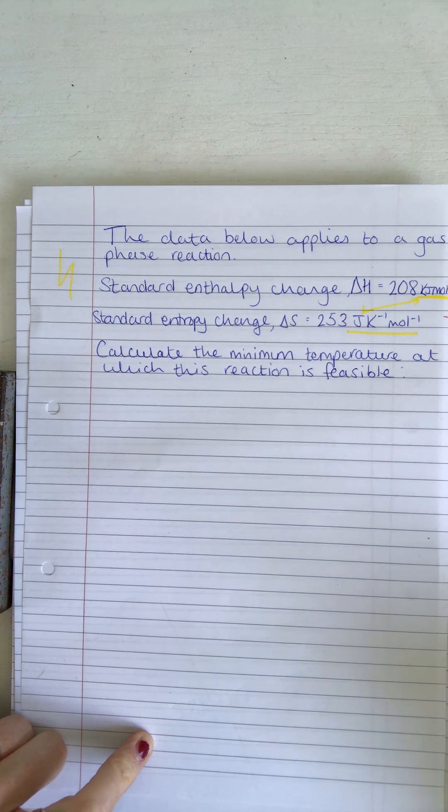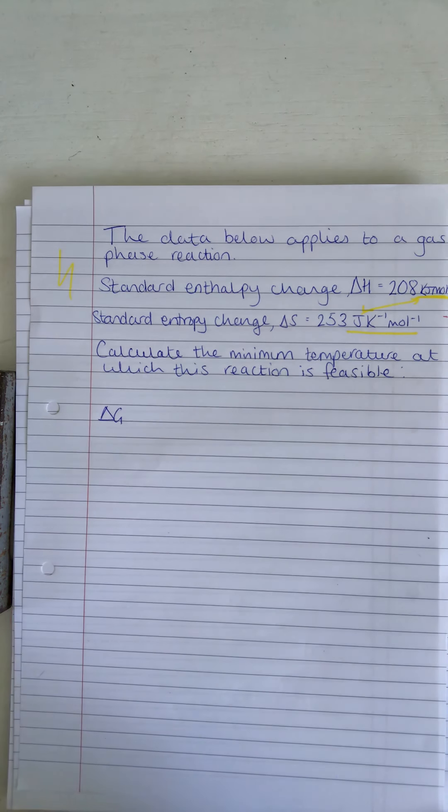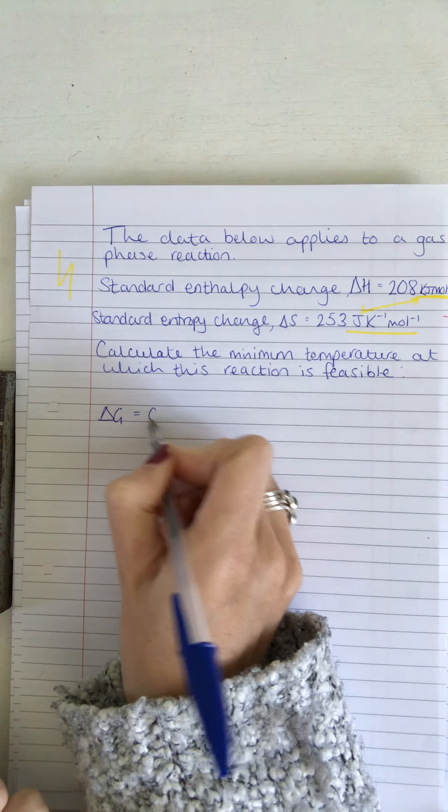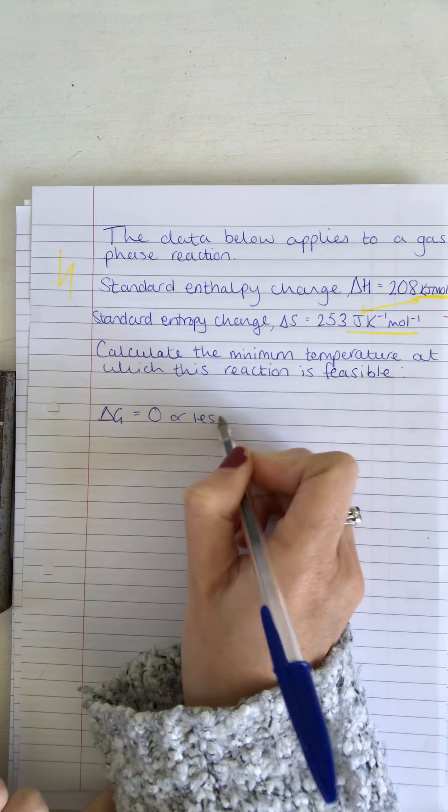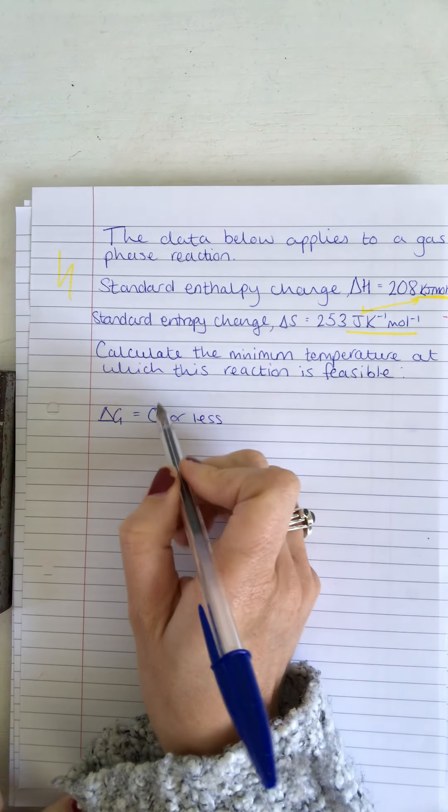So we know that, hopefully, that Delta G, Gibbs free energy, for a reaction to be feasible—for it to take place—needs to equal zero or less than zero. So in order to work out the minimum temperature it would be feasible, we assume that Delta G is zero for this calculation.